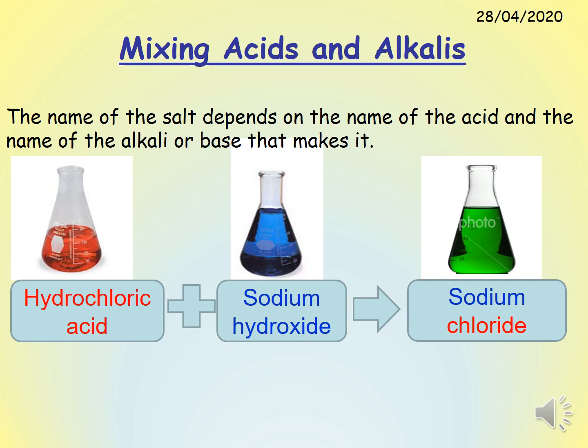What we need to do is look at the names of the chemicals that make the salt. In this case we've got hydrochloric acid and sodium hydroxide, and when these two react we end up with a salt called sodium chloride. The name sodium comes from sodium hydroxide — the name of the metal from the alkali forms the first part of the salt's name. The second part of the name comes from the type of acid used; hydrochloric acid always makes salts which have chloride in the name.